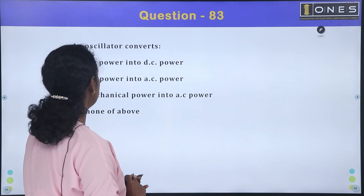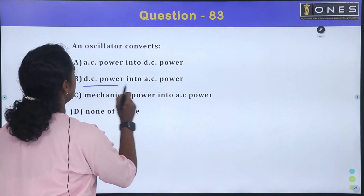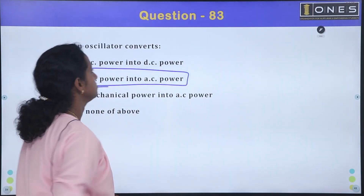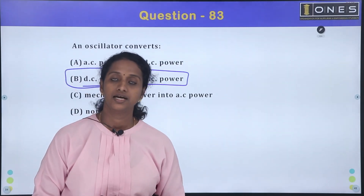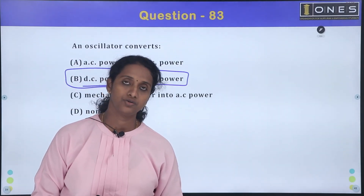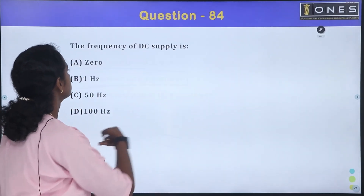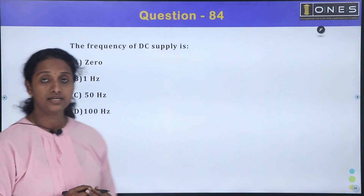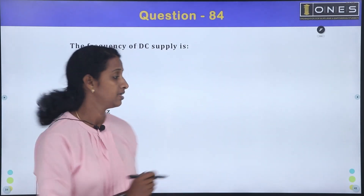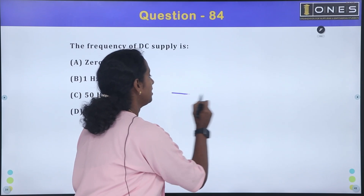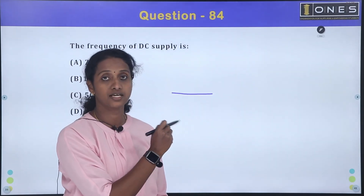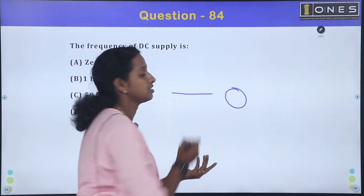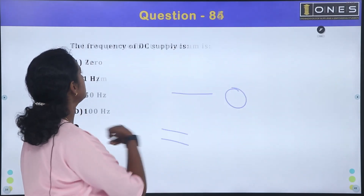An oscillator converts DC power into AC power. The frequency of a DC supply is zero, as DC has zero cycles per second.